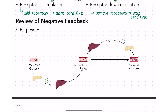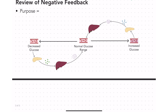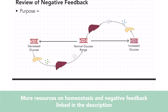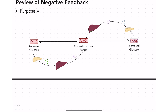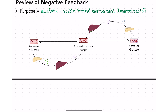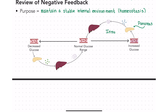Before we start talking about specific endocrine glands and the effects of specific hormones, we need to review negative feedback. Here we're just going to review the general concept — the purpose of negative feedback is to always restore the system to homeostasis, to its balanced set point. Using blood glucose as an example: blood glucose is typically kept within a relatively small range. Whenever blood glucose increases, say after you've eaten a meal, the pancreas will make the hormone insulin, which allows your body to take glucose out of the blood and put it into the cells, decreasing blood glucose.